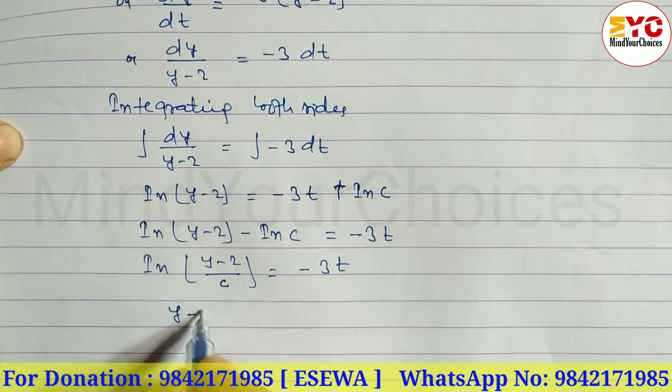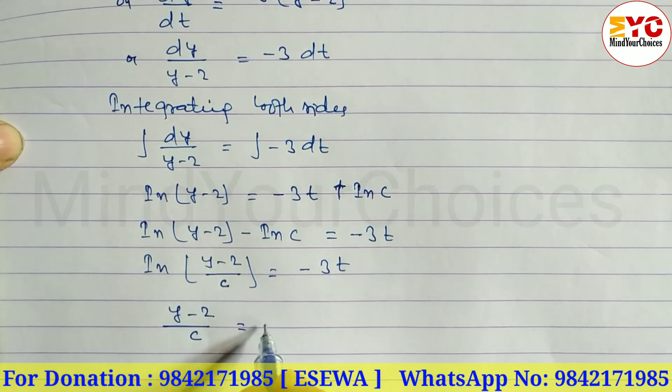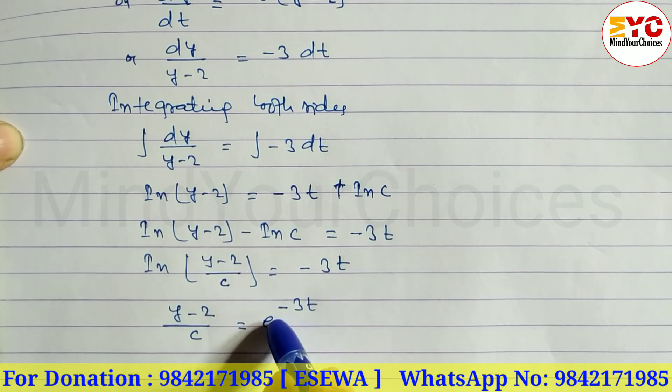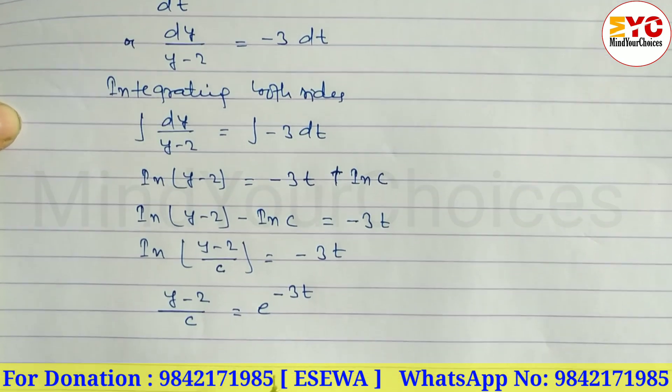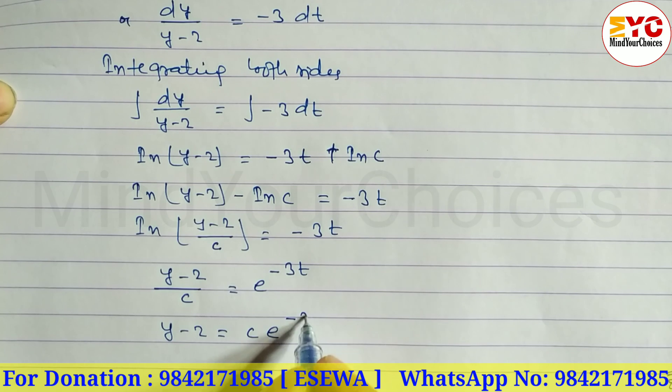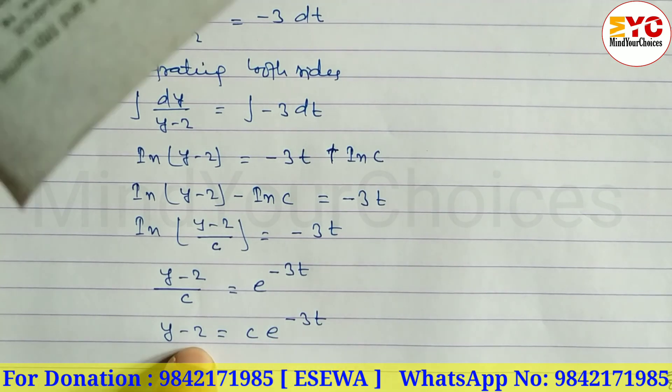So we can write (y-2)/c equals e^(-3t). After that, we cross multiply, so we can write y - 2 equals c·e^(-3t).